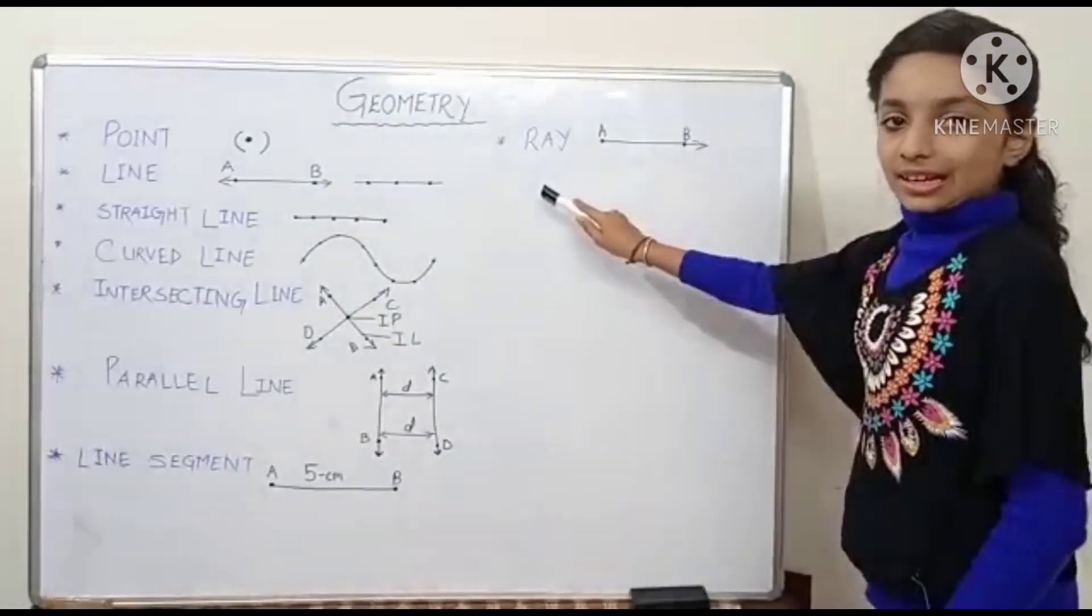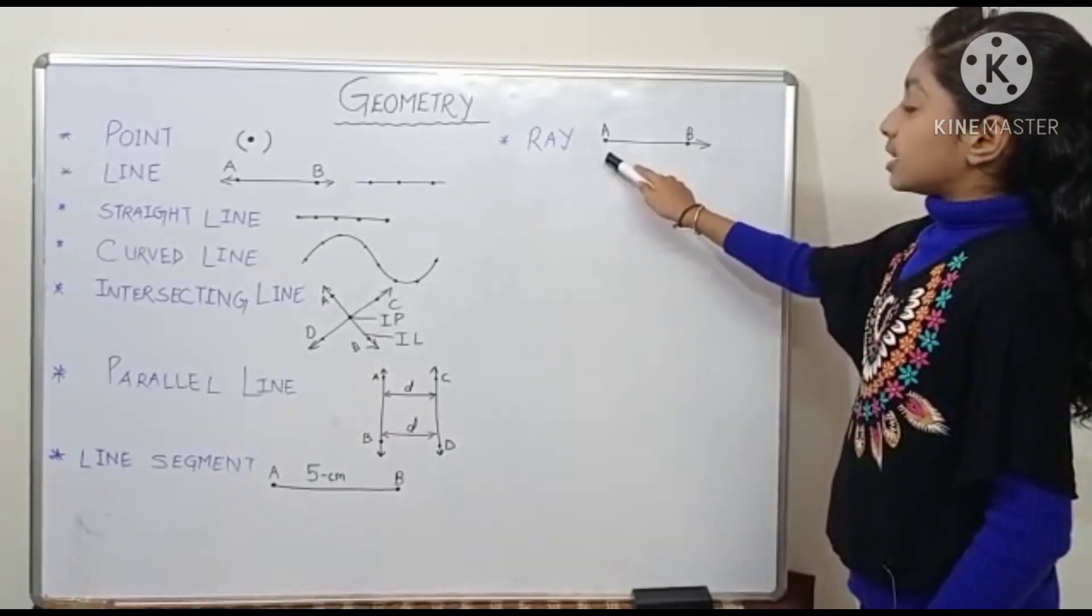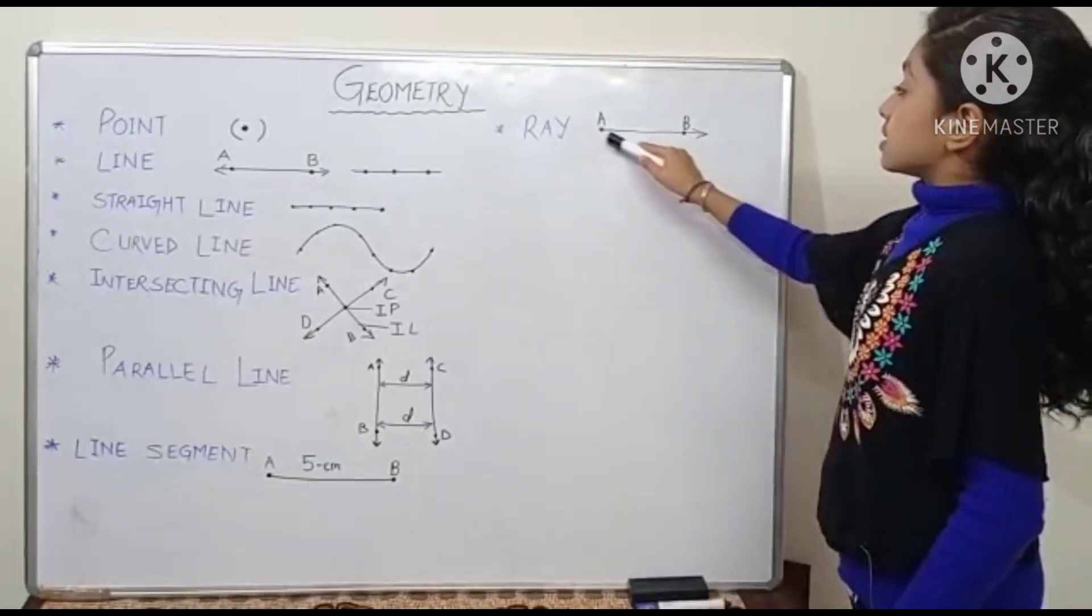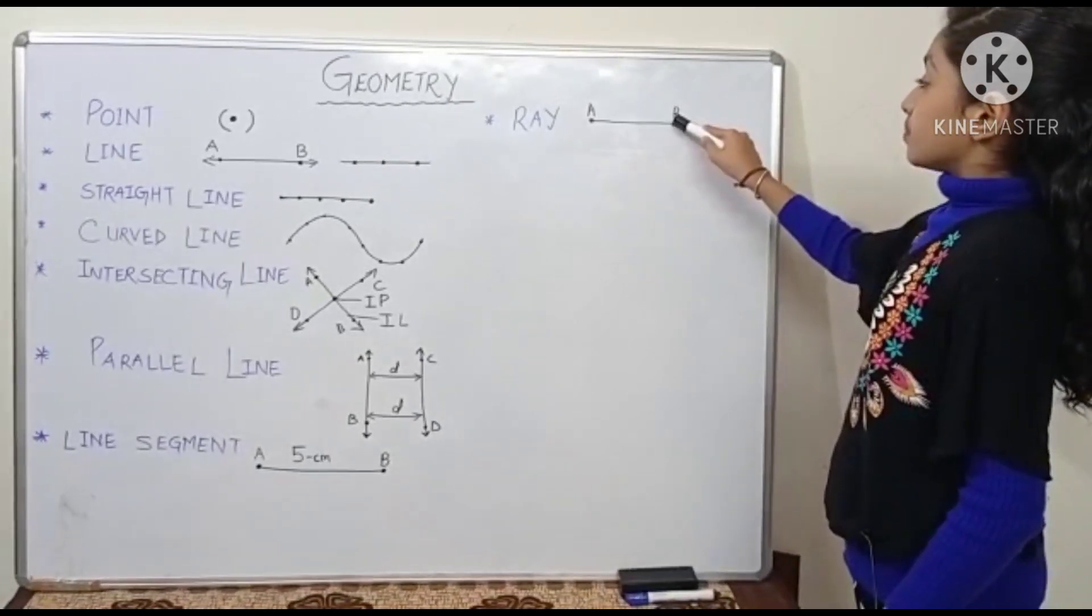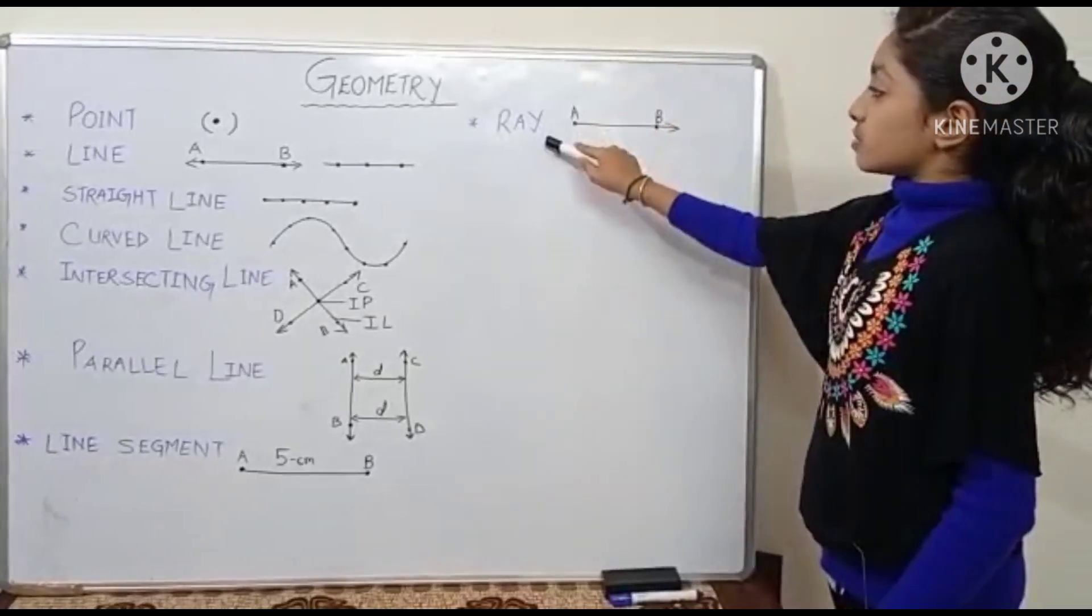Now, ray. So a ray has a starting point. So ray can be extended towards B, towards B point. It doesn't go back.